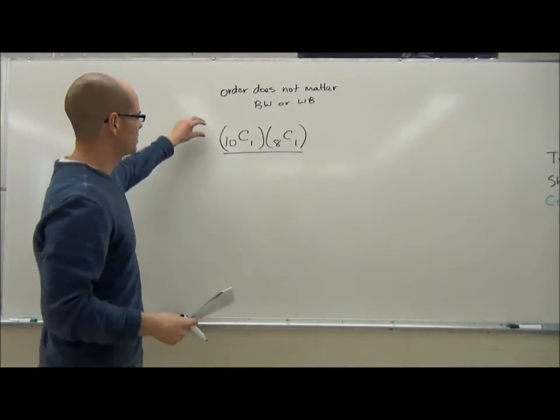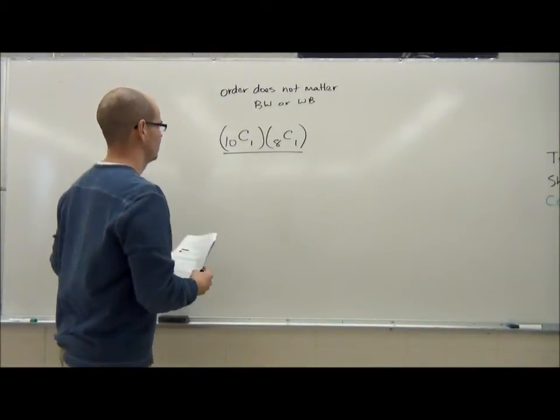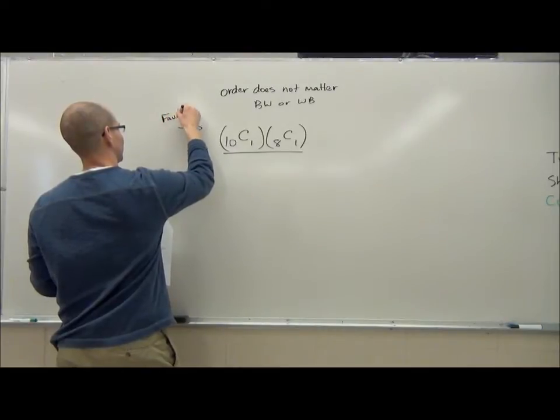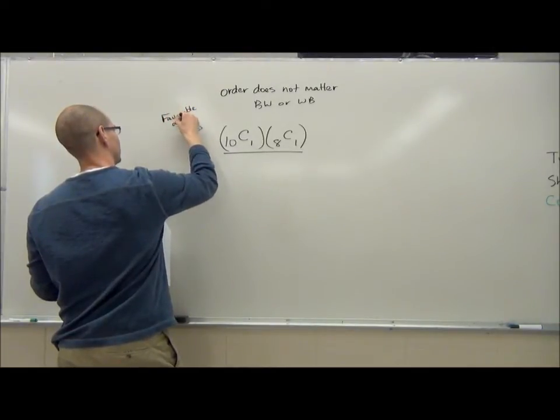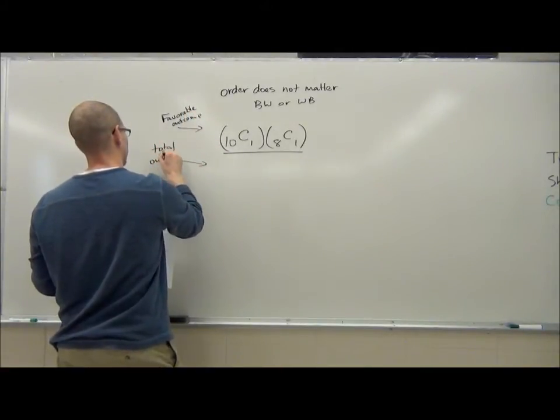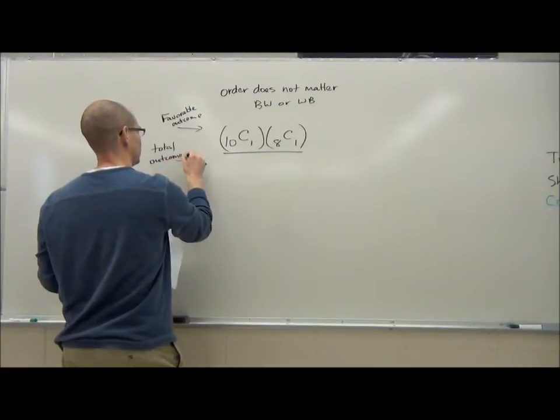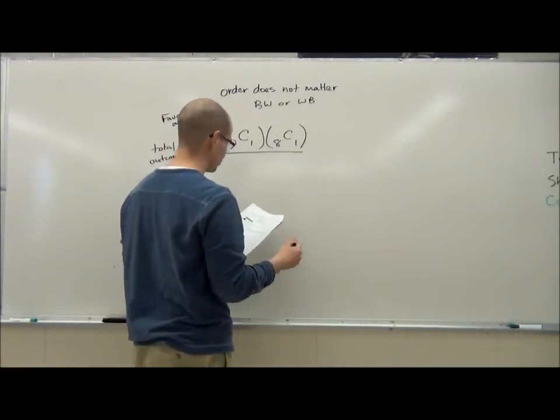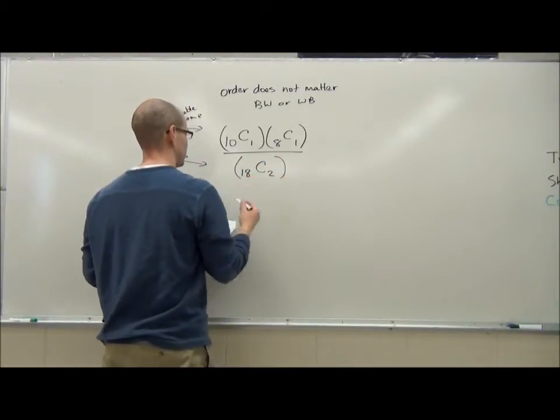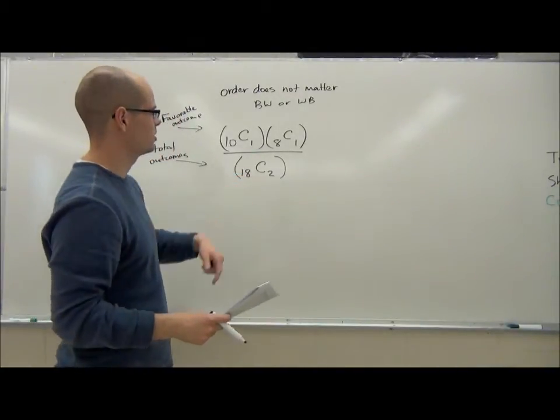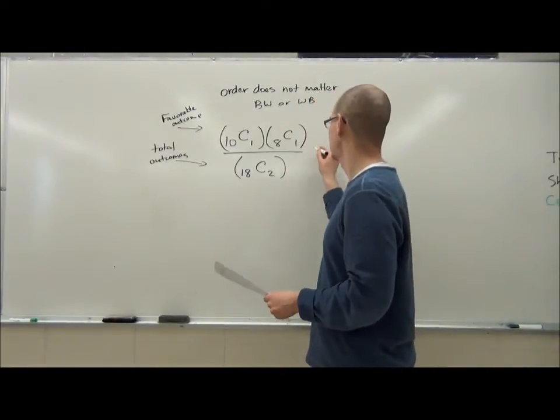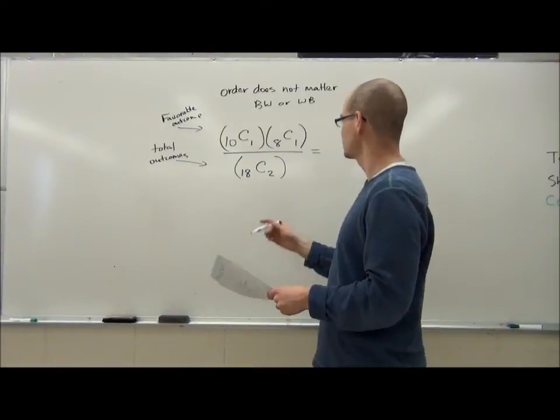And then this, remember on the top of a fraction for probability, is our favourable outcomes. In this case, favourable is a black and white. And then the bottom is total outcomes. So what are the total number of ways you can select two socks from a drawer? Well, if there's 18 socks in the drawer, it's 18C2 is the total number of ways you can select two socks from the drawer, considering that order doesn't matter at all. This will give us the correct answer here.